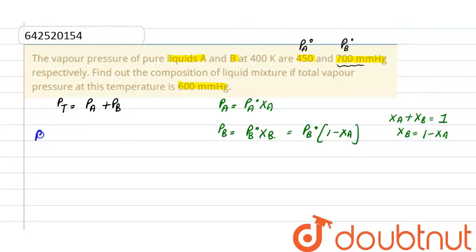Now, total pressure is equal to Pa node into Xa plus Pb node into 1 minus Xa. Here, Pa node into Xa plus Pb node minus Pb node into Xa.